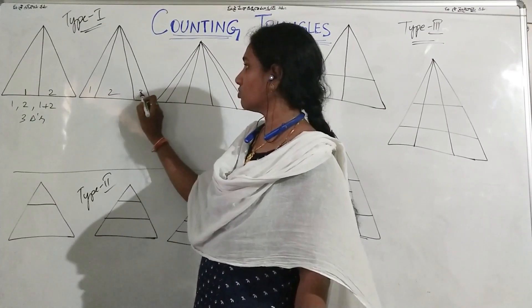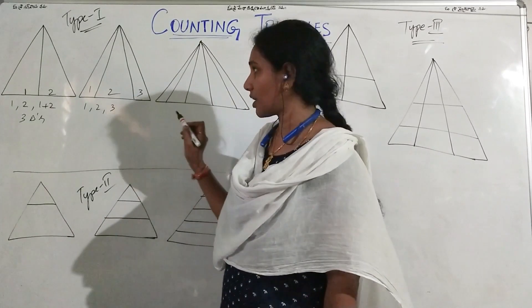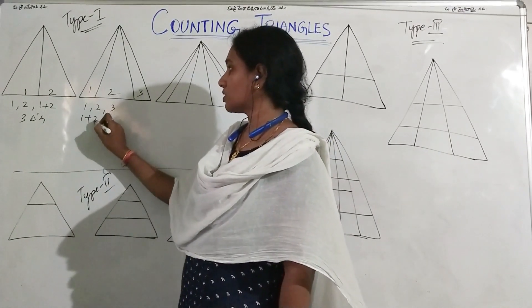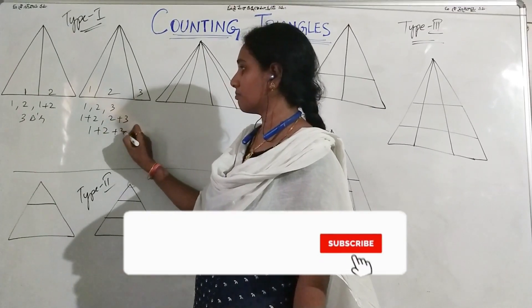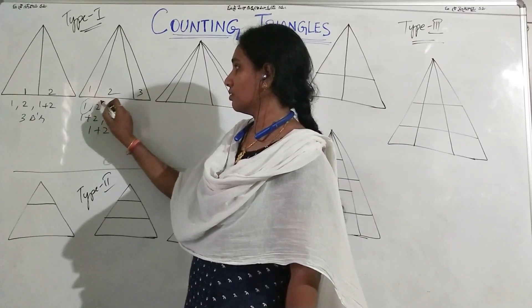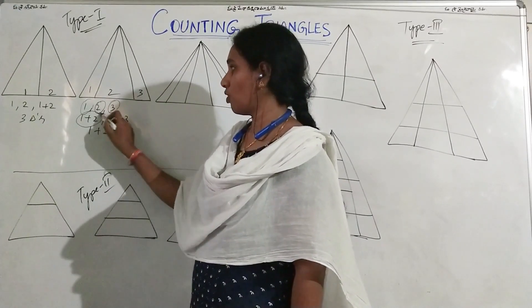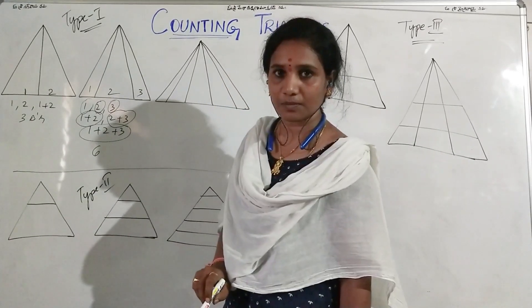Again, you are marking 1, 2, 3 here. These are individually 3 triangles. Now 1 plus 2 is a triangle, 2 plus 3 is a triangle. So if you observe here, 1, 2, 3, 4, 5, and together all of this is the sixth, so total 6 triangles are formed.